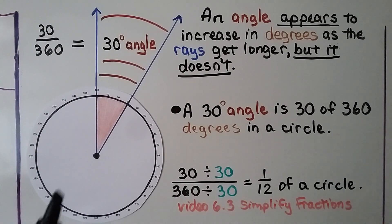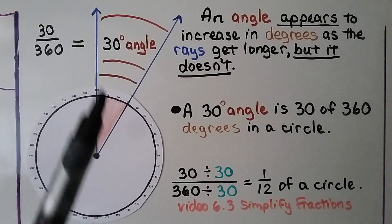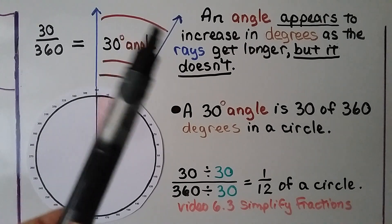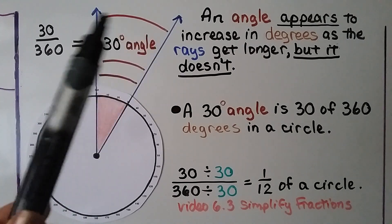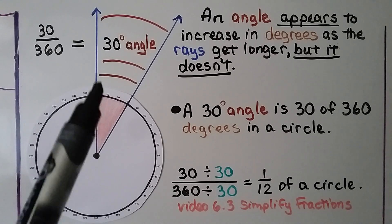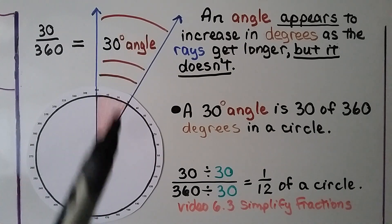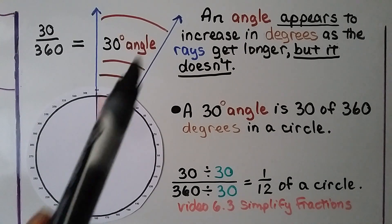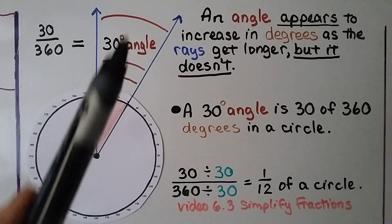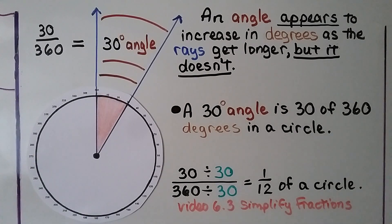An angle appears to increase in degrees as the rays get longer, because each ray becomes farther apart from the other, but it doesn't. Whether the rays are short or long, all the space in between is 30 degrees — it's a 30 degree angle. It doesn't matter how long the rays are.